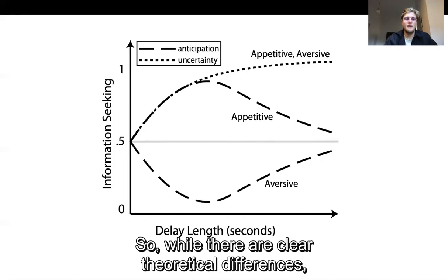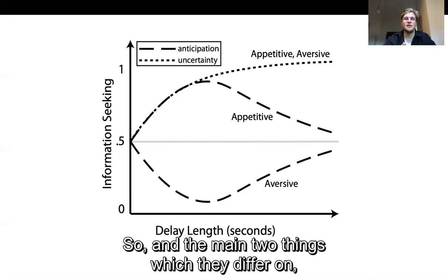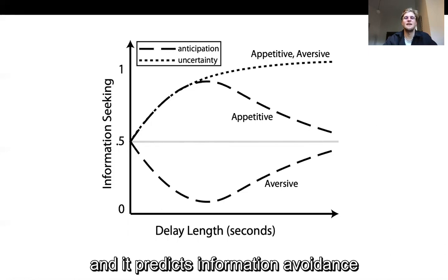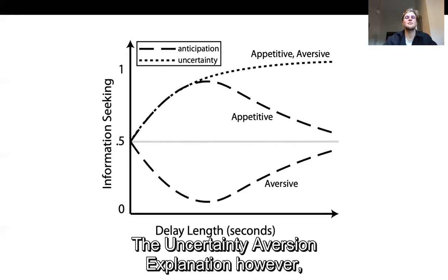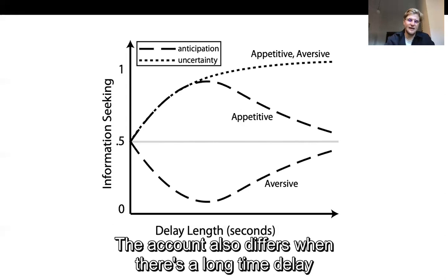So while there are clear theoretical differences between the two accounts, they also make quite distinct predictions depending on the circumstances at hand. The main two things which they differ on is when it comes to valence, so positive and negative, and delay. For valence the anticipation account predicts information seeking when the expected outcome is positive and it predicts information avoidance when the expected outcome is negative. The uncertainty aversion explanation however predicts information seeking regardless of valence. People just want to reduce their uncertainty about the future and they don't care whether this is positive or negative.